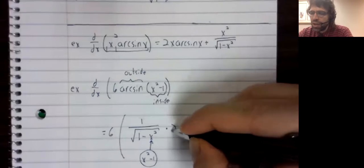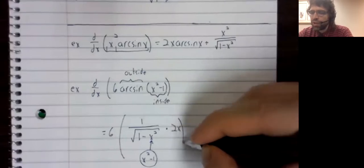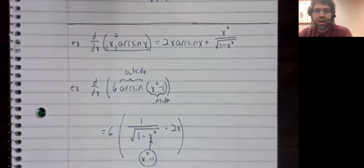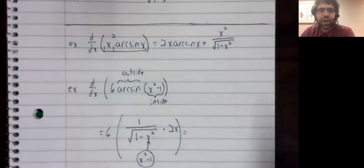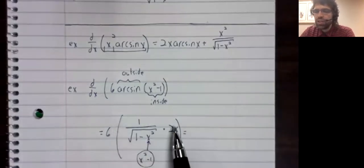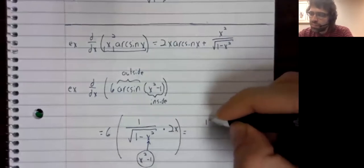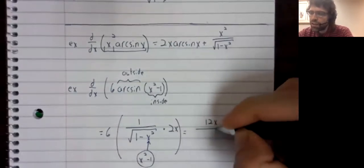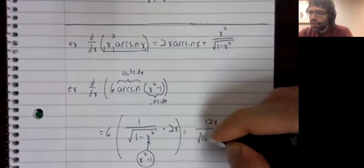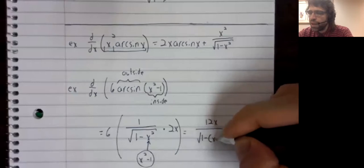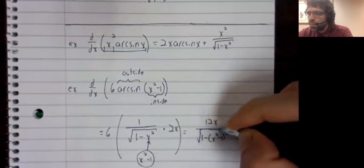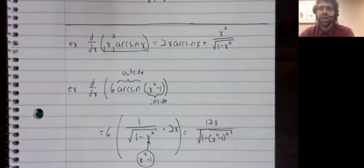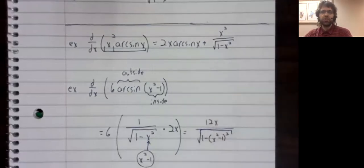Then we multiply by the derivative of the inside function. If we simplify a little, these constants and this x, 12x in the denominator, under a square root, one minus the inside function squared.